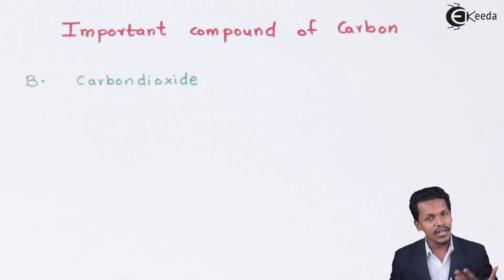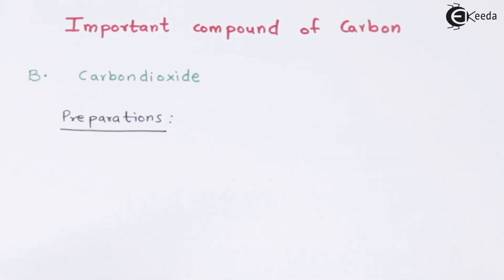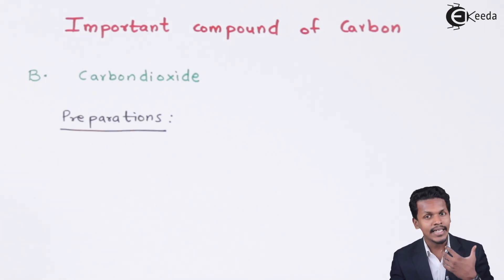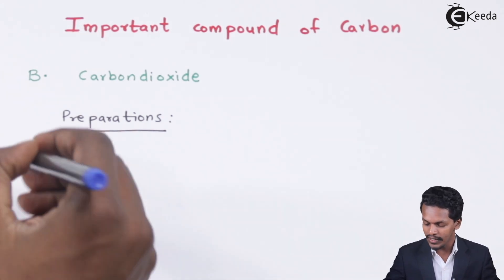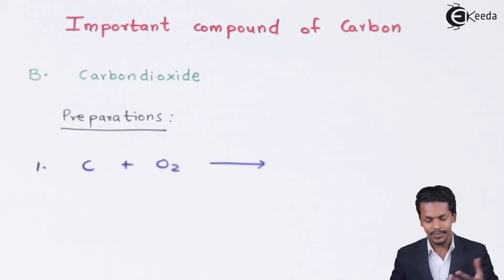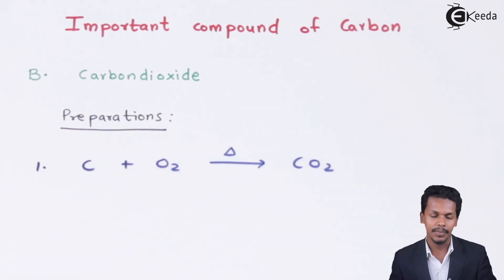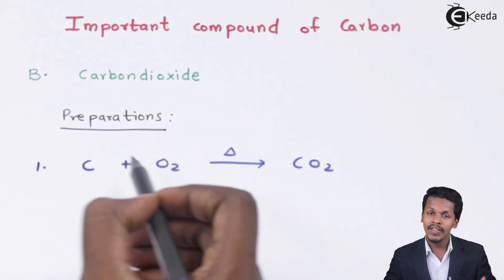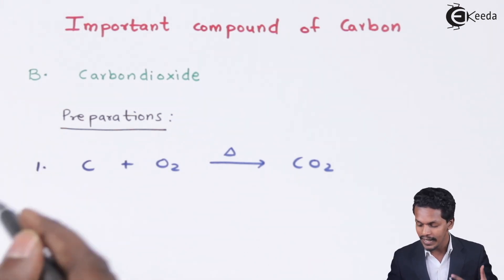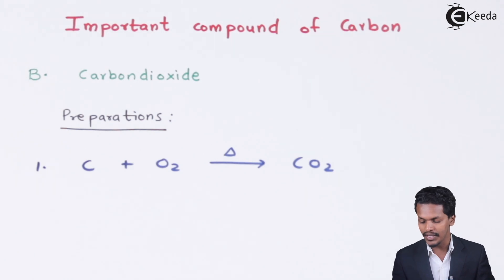We are going to talk about the preparation as well as the properties of carbon dioxide. Let us understand the preparation first. There are various methods from which we can prepare carbon dioxide. The first method: if carbon is treated with oxygen at high temperature, we get carbon dioxide. The oxygen must be present in excess; if oxygen is supplied in a limited quantity, carbon monoxide is formed instead. So we have to provide an excess amount of oxygen so that carbon reacts with O2 to give CO2.